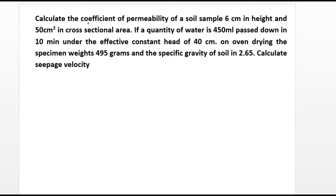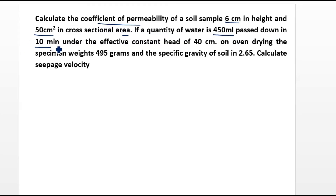The question is: calculate the coefficient of permeability of soil with a specimen 6 cm in height and 50 cm² in cross-sectional area, if the quantity of water 450 ml passes down in 10 minutes under an effective constant head of 40 cm. On oven drying, the specimen weighs 495 grams and the specific gravity is 2.65.